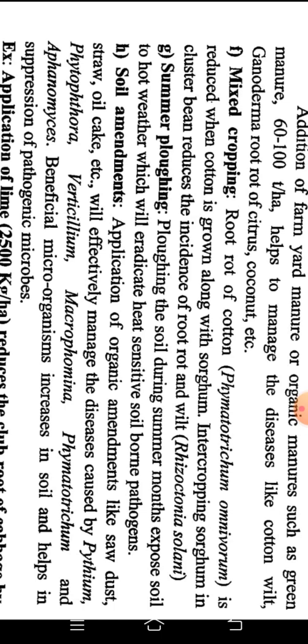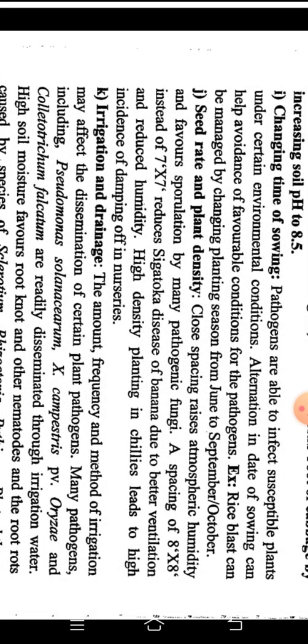Soil amendment involves application of different organic and inorganic amendments in the soil, which helps maintain soil structure, reduce soil-borne diseases, and increase beneficial organisms. Examples include sawdust, straw, oil cakes, and extractors, which effectively manage diseases caused by Pythium, Phytophthora, Verticillium, and Macrophomina. Application of lime at 2,500 kg per hectare can reduce club root of cabbage by increasing soil pH up to 8.5, and this increased pH reduces club root of cabbage.